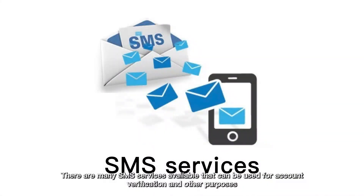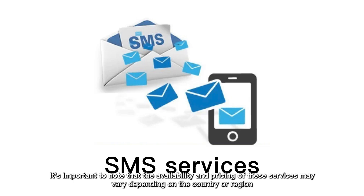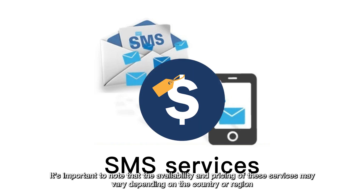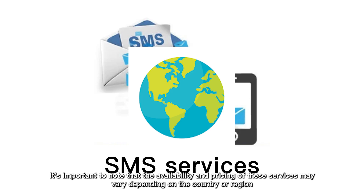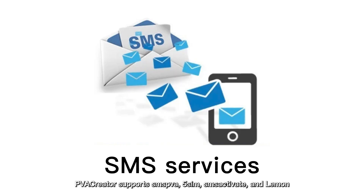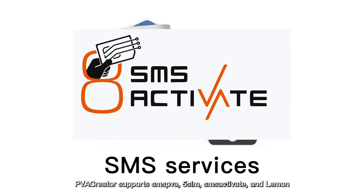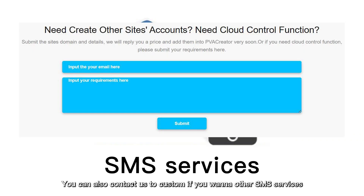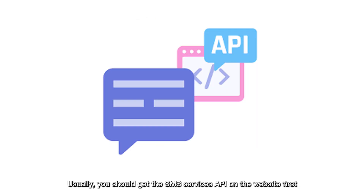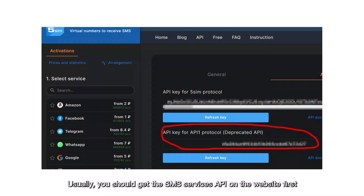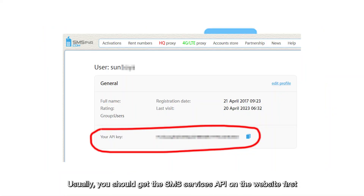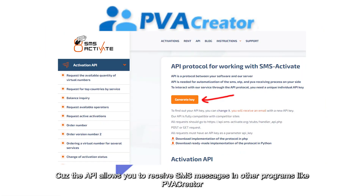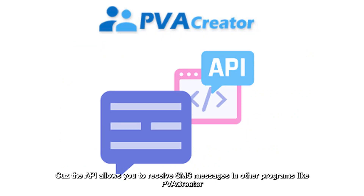There are many SMS services available that can be used for account verification and other purposes. It's important to note that the availability and pricing of these services may vary depending on the country or region. PVA Creator supports SMSPA, 5SIM, SMSactivate, and Lemon. You can also contact us to customize if you want other SMS services. Usually, you should get the SMS service's API on the website first, because the API allows you to receive SMS messages in other programs like PVA Creator.